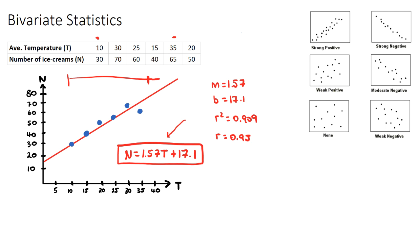But if I say, how many ice creams do we sell if the temperature was 50 degrees, so over here at 50 degrees, that's called extrapolation. So interpolation is within the known data, extrapolation is outside the known data.